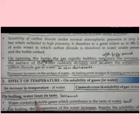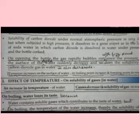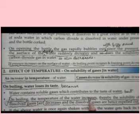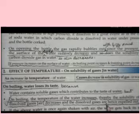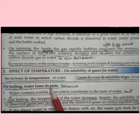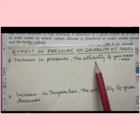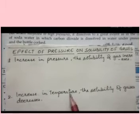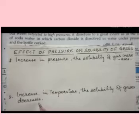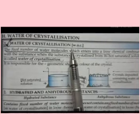Boiled water tastes flat because water contains soluble gases which contribute to its taste. When you boil water, the temperature increases and thereby the solubility of dissolved gases decreases — the dissolved gases are expelled out. When there are no gases in the water, it tastes flat or loses its taste. Remember these two points: increase in pressure — solubility of gas increases; increase in temperature — solubility of gases decreases.